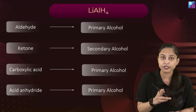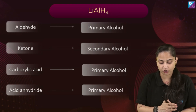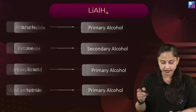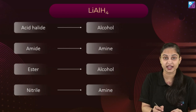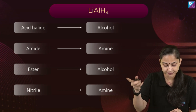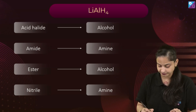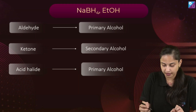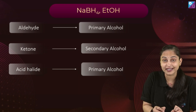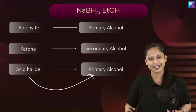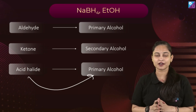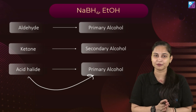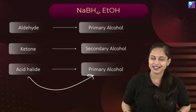For lithium aluminum hydride: aldehyde to primary alcohol, ketone to secondary alcohol, carboxylic acid to primary alcohol, acid anhydride to primary alcohol, acid halide to alcohol, amide to amine, ester to alcohol, and nitrile to amine. For sodium borohydride: aldehyde to primary alcohol, ketone to secondary alcohol, and acid halide to primary alcohol. Hope this video helps you in your preparation. Take care and goodbye.